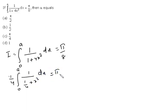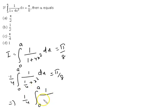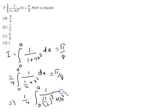Now we can rewrite this in standard form. From 0 to a, the integrand becomes 1/((1/2)² + x²) dx, which equals π/8. Here we have expressed 1/4 as (1/2)² to match the standard arctan integration formula.